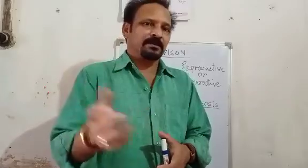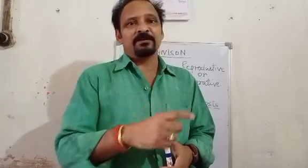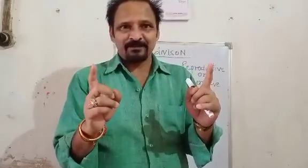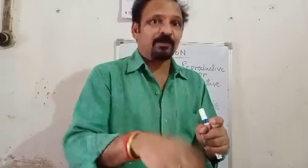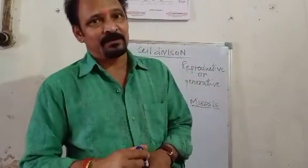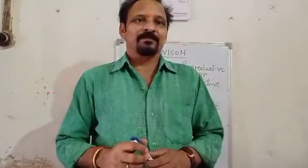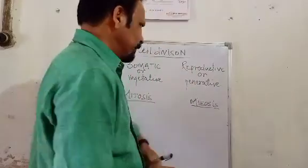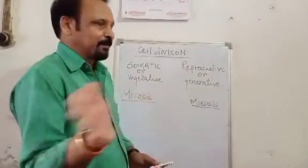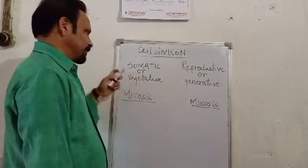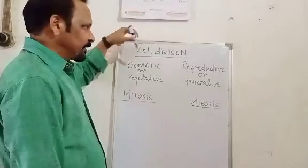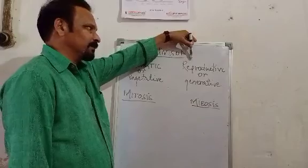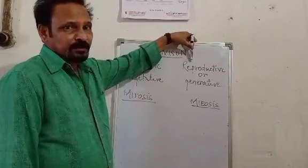Two types of cell division are mitosis and meiosis as given in your book. Any living organism has two types of cells which are different from one another anatomically, not morphologically. The cells are not different from outside, but anatomically different. The first type of cell present in any living organism — whether plant or animal — is the somatic or vegetative cell. The second type is the reproductive or generative cell.